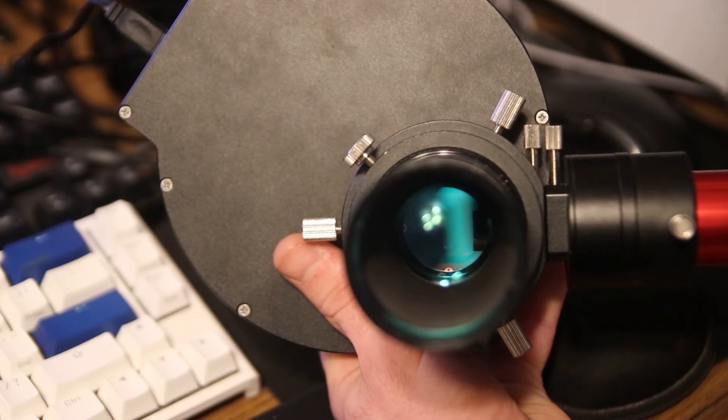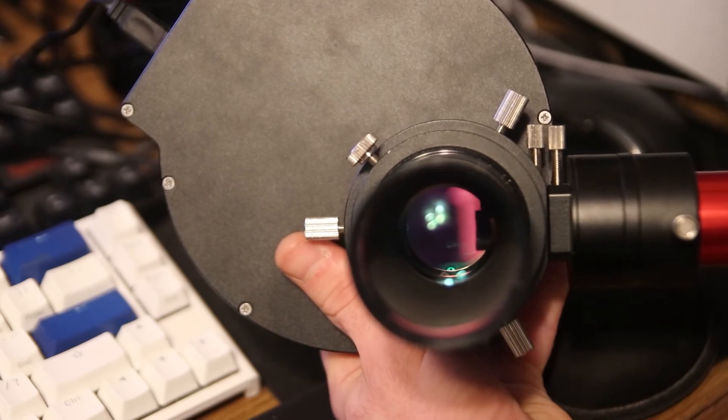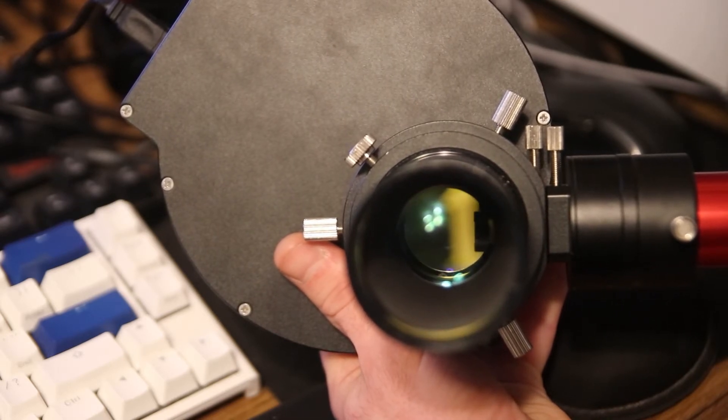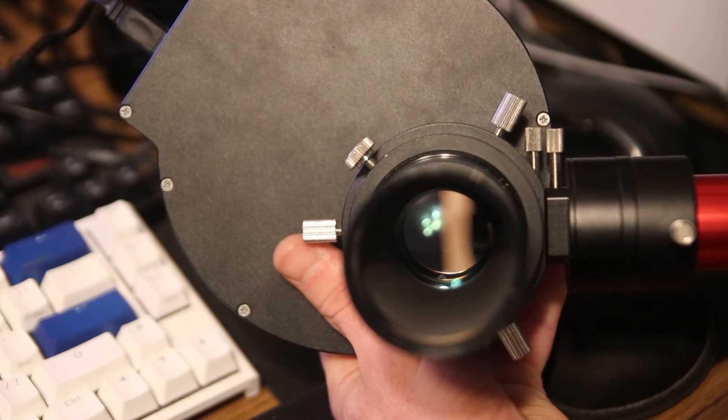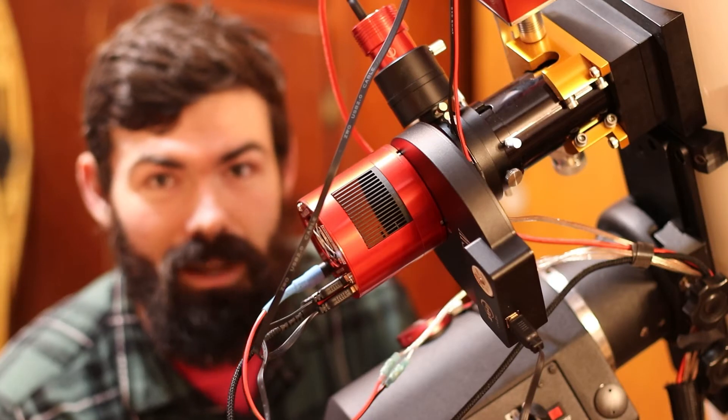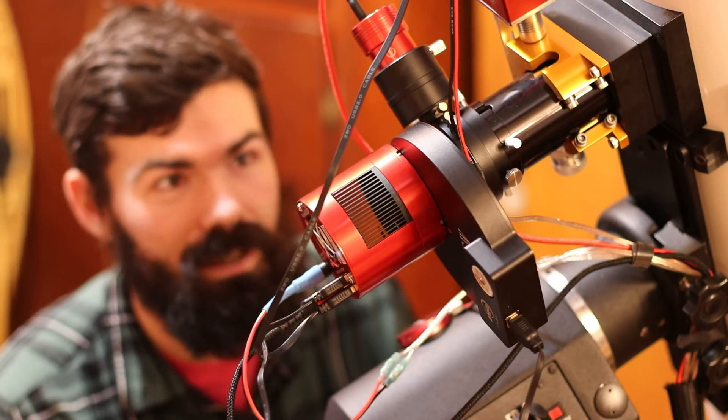So then next in my train, other than some spacers, is my filter wheel. I've got Optolong filters in here. They're kind of a mid-range and they seem to work really well for me. I've got regular LRGB and HSO set in there so I can do broadband true color imaging and narrowband.